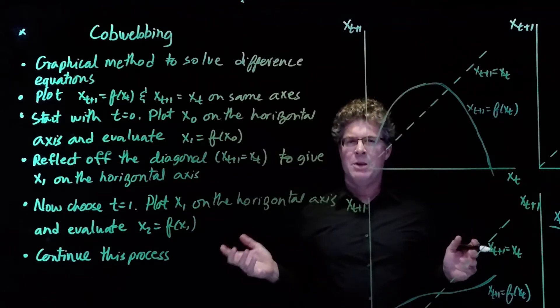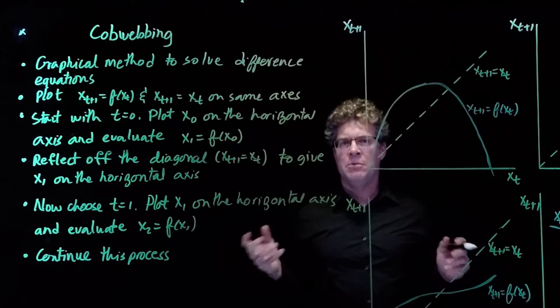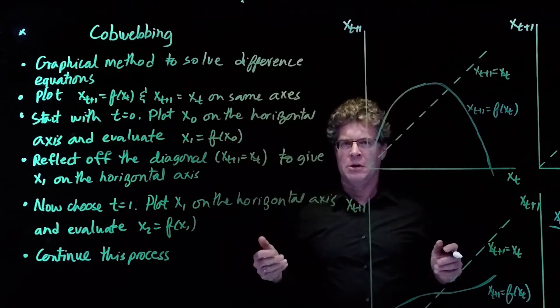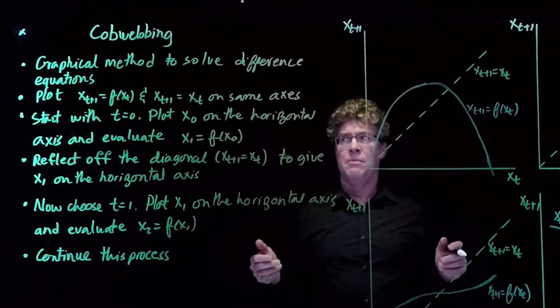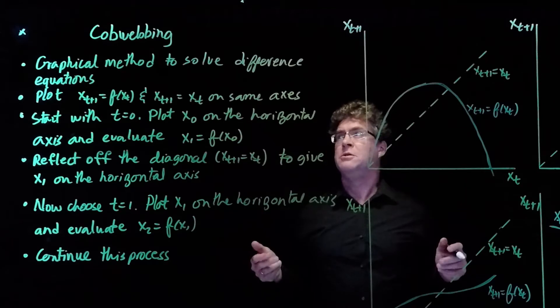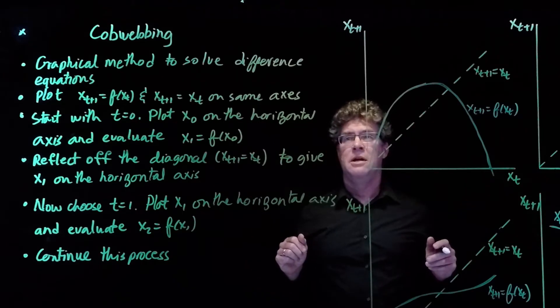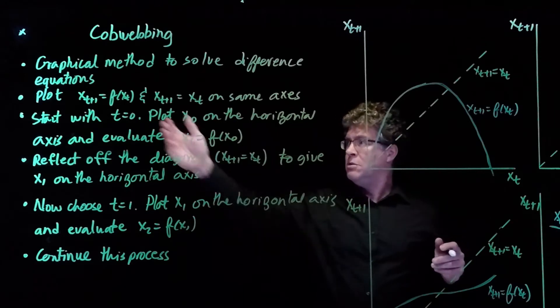Hi, I want to talk a little bit about the method of cobwebbing. Cobwebbing is this graphical method that we can use to solve recursion relations as we move forward in time. And these recursion relations are also called difference equations. There's a couple of steps that we go through to do this, and they're shown just up here.